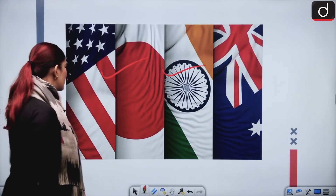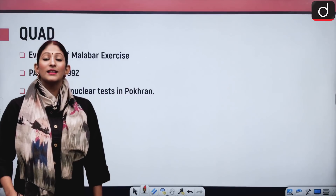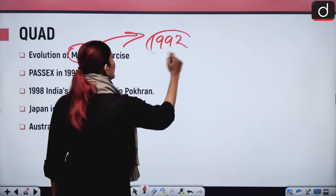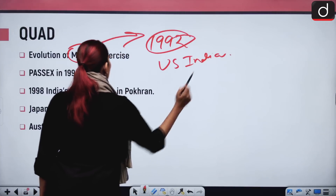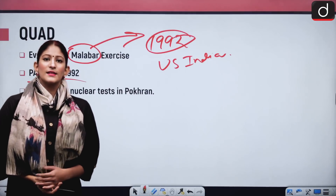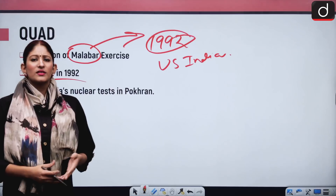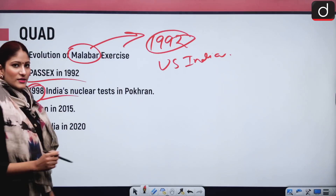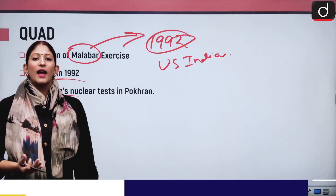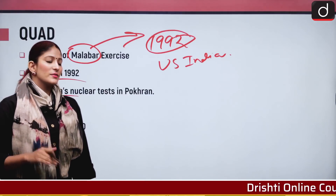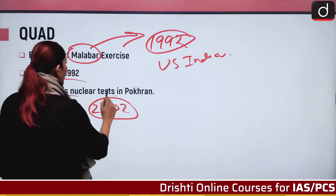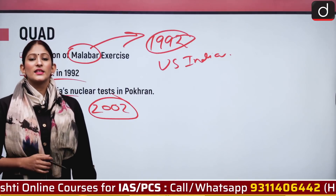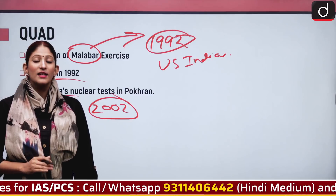The history of Quad started with the Malabar exercise. The Malabar exercise has been in order since the year 1992 between the US and India and was known as a passage exercise or PASSEX. It started as a naval drill to enhance maritime cooperation, but after 1998 it was stopped because of India's Pokhran nuclear test and the souring of relations between India and the US. It was again resumed in the year 2002. Japan joined the Malabar exercise in 2015, and more recently Australia has also taken part, which has infuriated China.